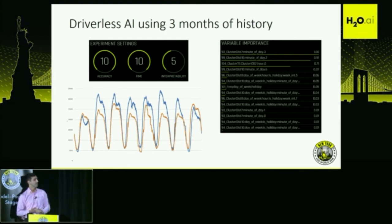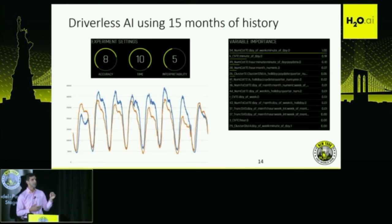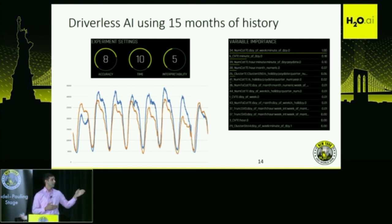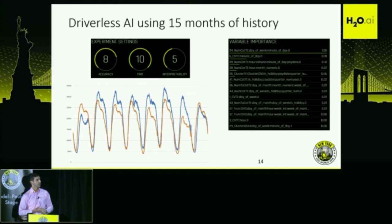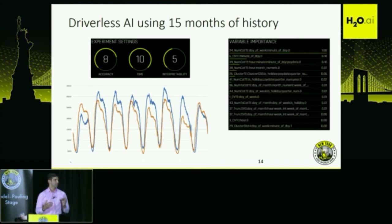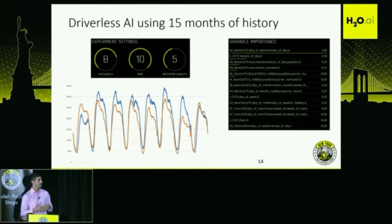I then gave it a full 15 months of history. I dropped the accuracy setting a bit in terms of run time because it's a much larger dataset. Here you can see it picked up a lot more in terms of some of that growth. One big thing I noticed in variable importance is that it's now picking up on day of week and minute of the day, which we've noticed you need to combine more time features together to get a better understanding due to the variability across days and time of day. Still low in some points, but much closer in others.